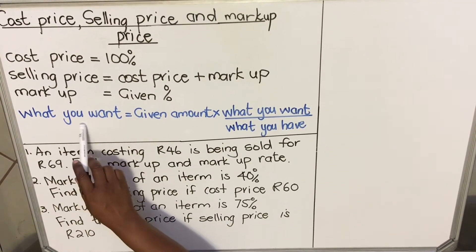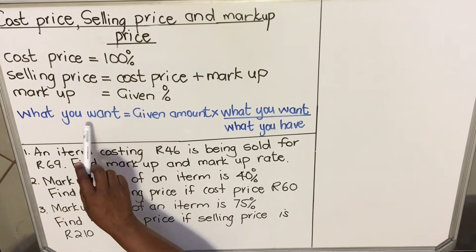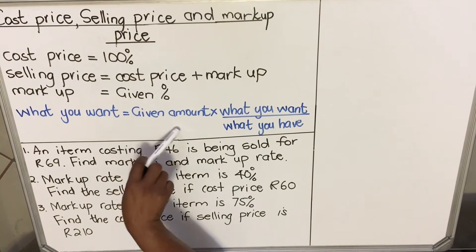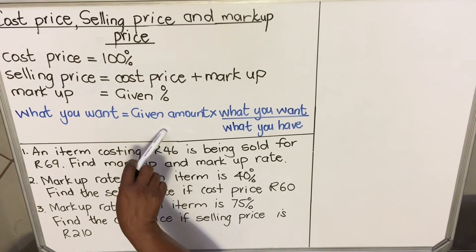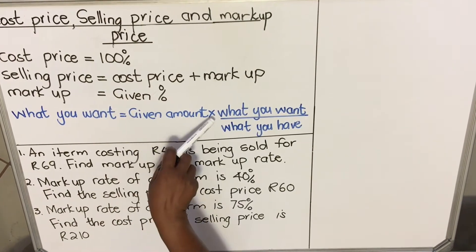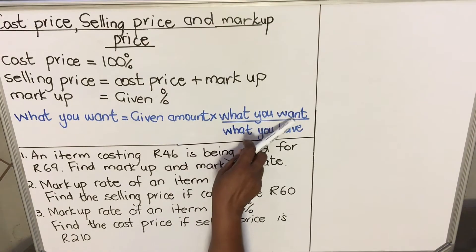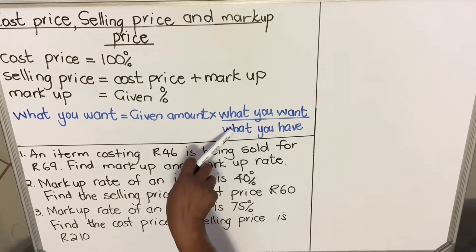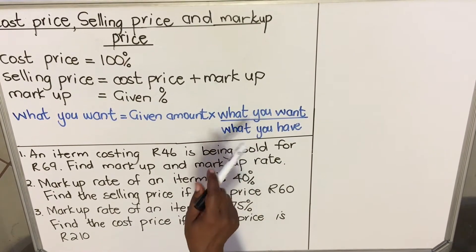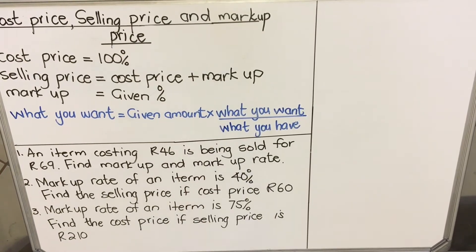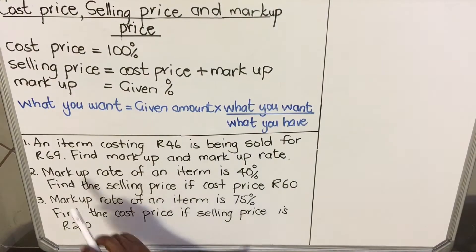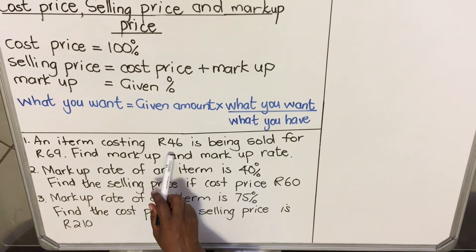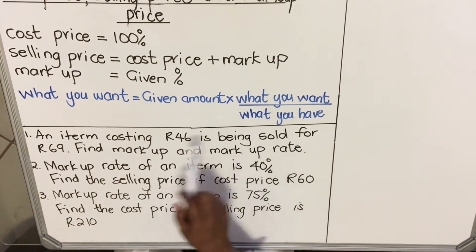What you want to calculate is equal to the given amount in the question, multiplied by what you want in percentage, divided by what you have in percentage. Let's use examples to explain this. An item costing 46 rands is being sold for 69 rands.